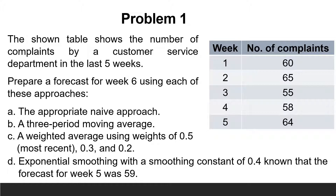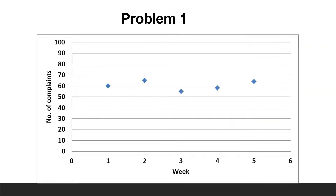The fourth step is to select a forecasting technique. We are already asked to make the forecast with different techniques for training purposes. The next step is to make the forecast, and finally to monitor the forecast, which we have not yet learned. So we will go through two steps only: plotting and examining the data, then making the forecast. The plotted data shows that variations around an average exist, and there is no trend or cycles, so let us move to the next step.